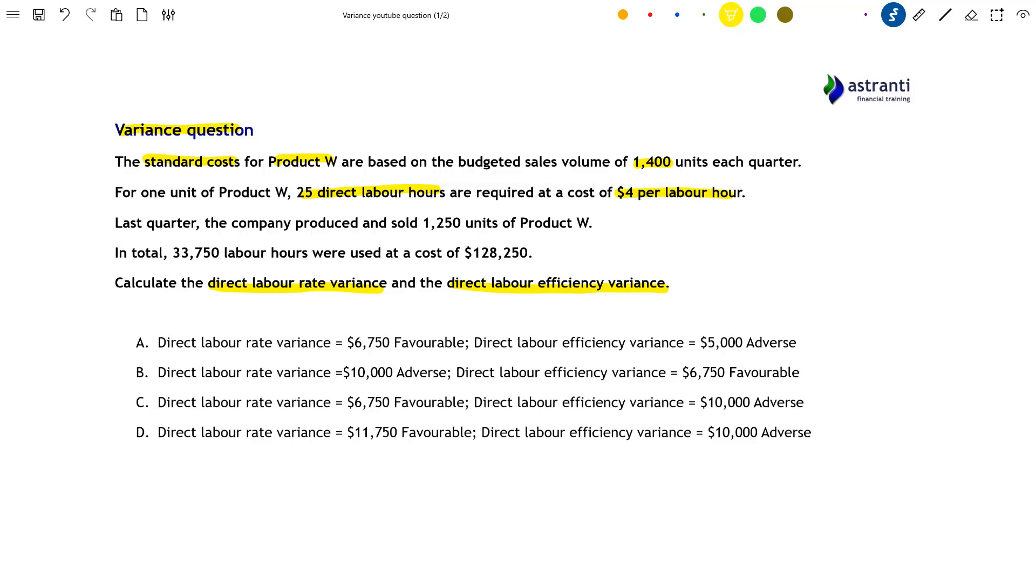The company produced and sold 1,250 units - that's the actual number of units, which is very important for our calculation. The actual costs for this production period were $128,250, and 33,750 labour hours were used. We now have all the information needed to calculate the labour rate variance and the labour efficiency variance.